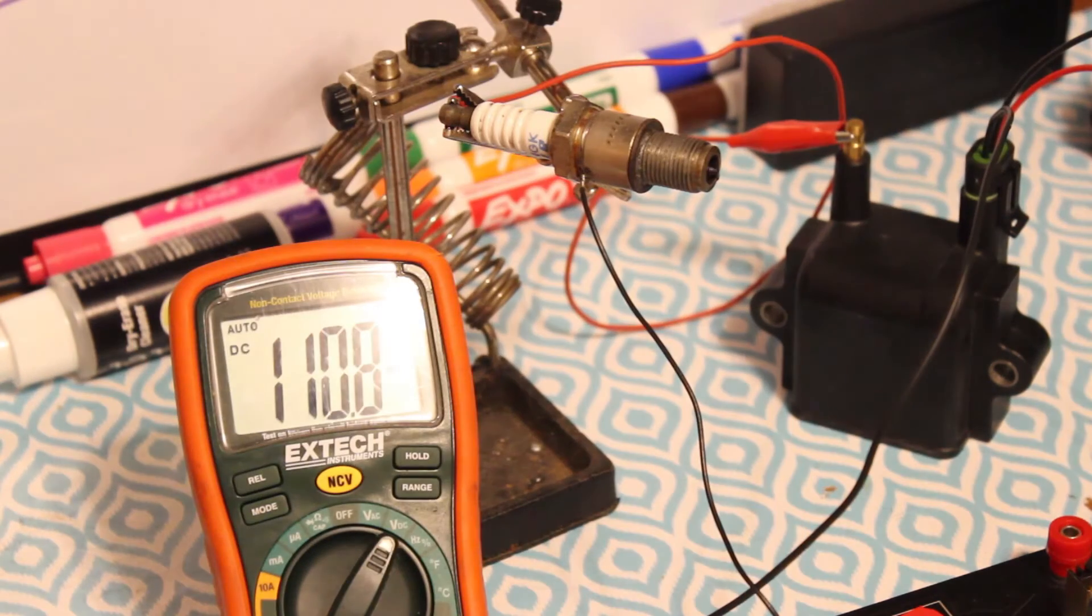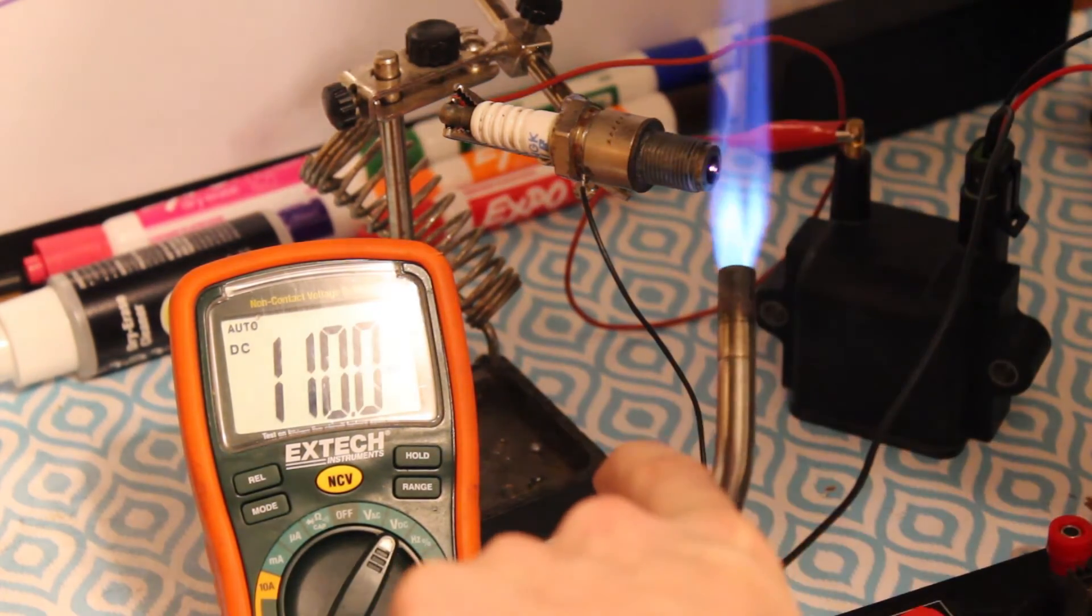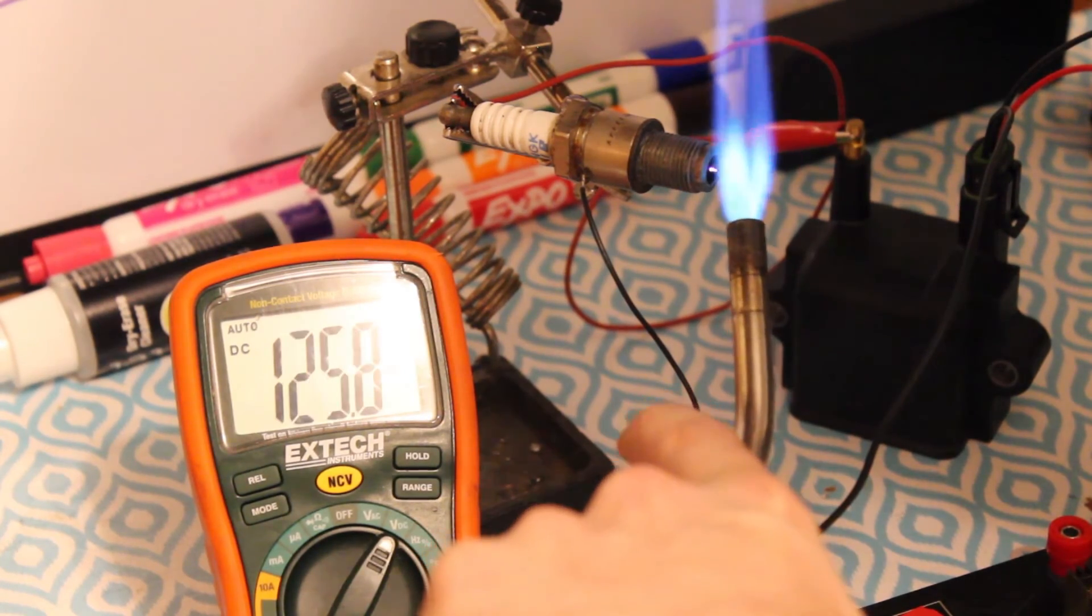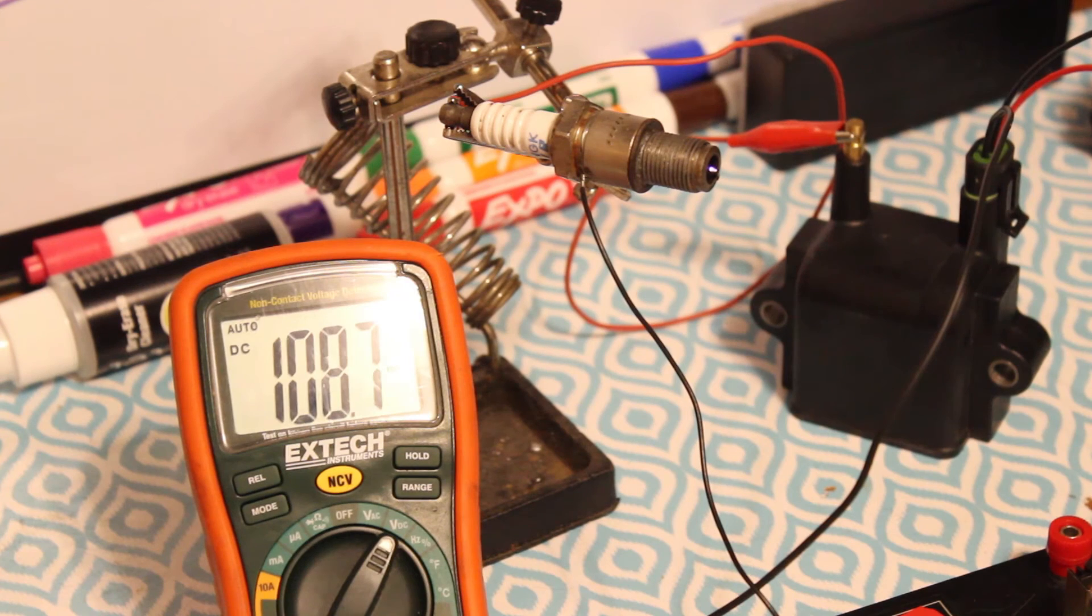Now, let me show you what it looks like with the spark plug running. As you can see, it's about 100 millivolts just from the residual ions after each spark plug pulse. But as I run the torch over it, it jumps to over 150 millivolts.